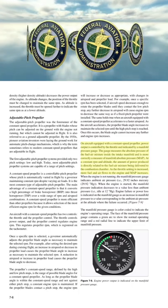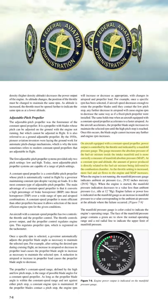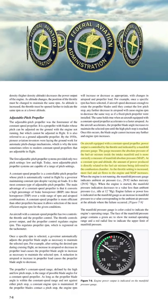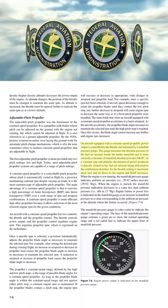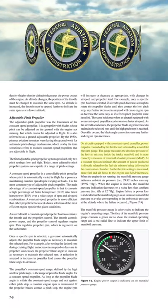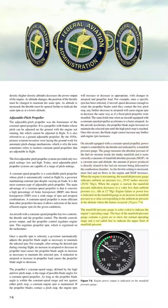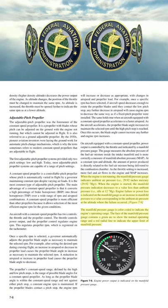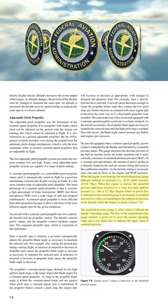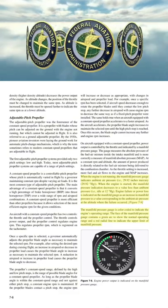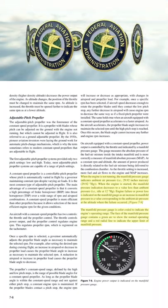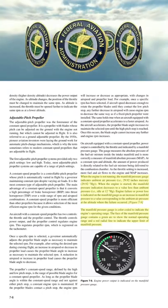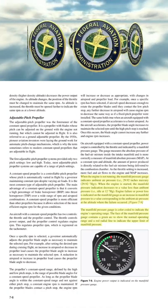On aircraft equipped with a constant speed propeller, power output is controlled by the throttle and indicated by a manifold pressure gauge. The gauge measures the absolute pressure of the fuel-air mixture inside the intake manifold — more correctly called manifold absolute pressure (MAP). At a constant RPM and altitude, the amount of power produced is directly related to the fuel-air mixture delivered to the combustion chamber. When the engine is not running, the manifold pressure gauge indicates ambient air pressure (29.92 inHg). When the engine is started, manifold pressure decreases below ambient, and at idle it may read approximately 12 inHg.